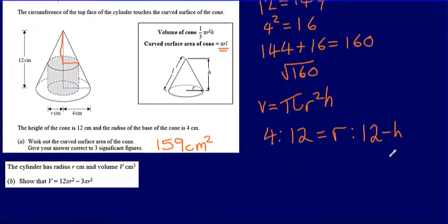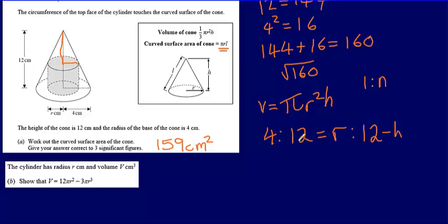Now I've got an equation. The way to solve this is to put both ratios in the form 1 to n. We divide each ratio by the first part. Dividing 4 to 12 through by 4 gives 1 to 12 over 4. Dividing r to 12 minus h through by r gives 1 to 12 minus h over r.